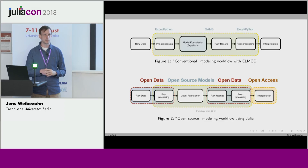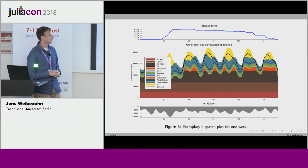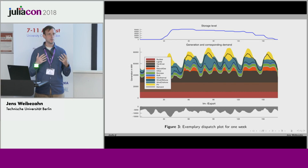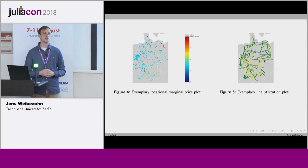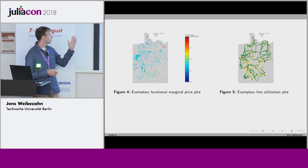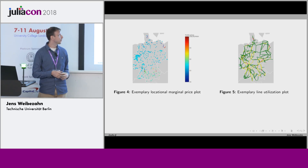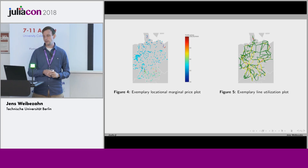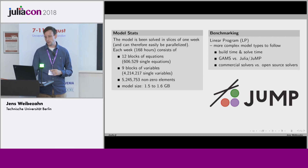For example, we can use Julia's plotting functions to plot a very nice dispatch graph for an exemplary week, use geocoded data to plot location and marginal prices for Germany, and show how the transmission grid is utilized — all in very nice plots. So those are already many advantages we can use in Julia.